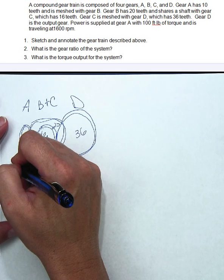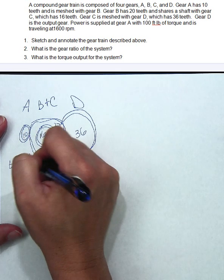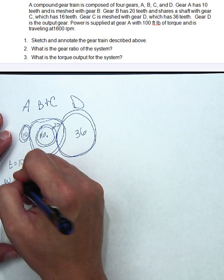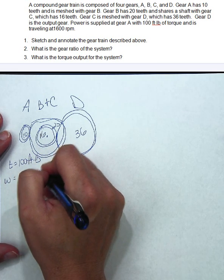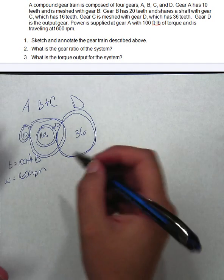Gear A has an input torque of 100 foot-pounds and an angular velocity of 1600 RPMs. Alright, so first we're going to find the gear ratio of the system.